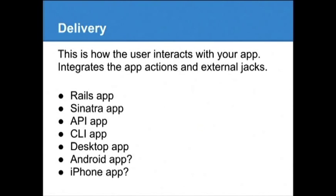The delivery mechanism is how the user interacts with your app — it gets input from the user and shows the output. A Rails app, Sinatra app, API app, command line app, or desktop app would all be delivery mechanisms. With the Obvious structure, it would even be possible to pull your entire app folder into an Android or iPhone app using a tool like RubyMotion, because your app isn't tied to Rails. If you have a working web app and just want a native interface for it, that might be a really great way to go.